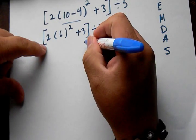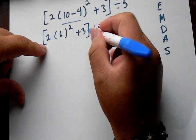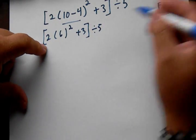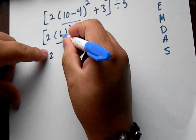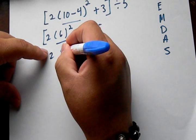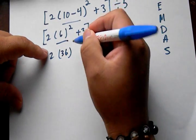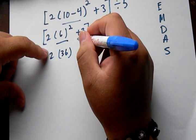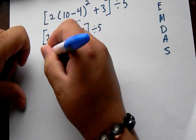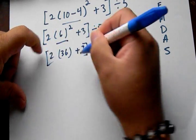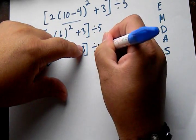Then we can square, because the exponent's next. Now we have 2 and 6 squared — that's 36. You can use your calculator if you want to, it's easier. So now we have 2 times 36 plus 3 divided by 5.